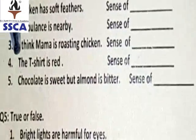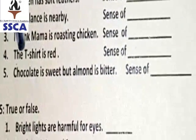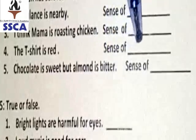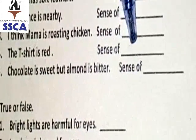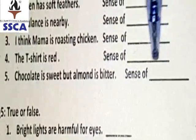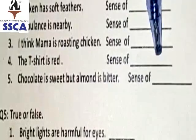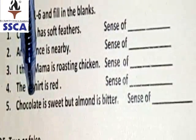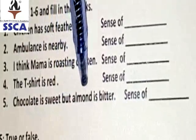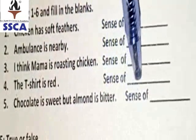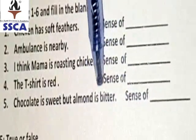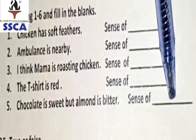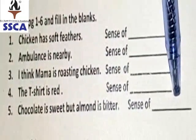The fourth one is: The t-shirt is red — I can recognize it with the sense of blank. Do you know which sense helps us in the recognition of colors? Write the correct sense in this blank. And the last one is: Chocolate is sweet but almond is bitter — I can differentiate between two foods with the help of blank sense. Think about it and fill in the blanks correctly.